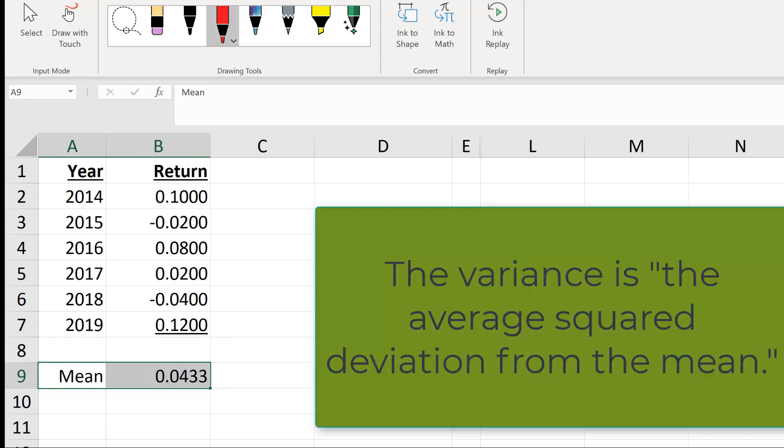Variance in words is the average squared deviation from the mean. So let's think about what this means.